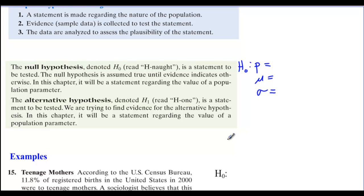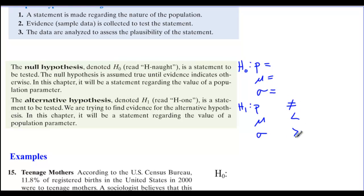The alternative hypothesis, H sub one — read H-one — is also a statement to be tested. We are trying to find evidence for the alternative hypothesis. In this chapter, it will be a statement regarding the value of a population parameter: P, mu, or sigma. The alternative hypothesis is actually what we're trying to prove — what we're trying to say the evidence is suggesting. For H-one, we use not equals, less than, or greater than. In some books, you might see H sub a.